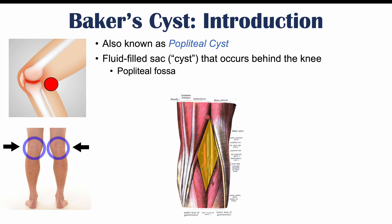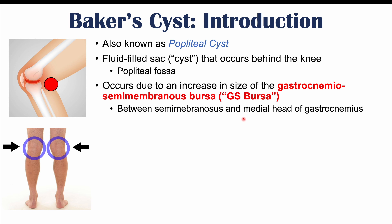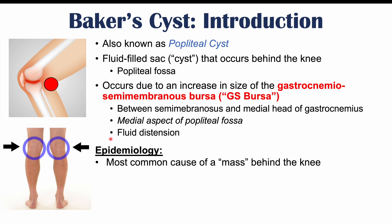Here is the popliteal fossa in this location. We'll talk about the muscles in more detail that delineate the popliteal fossa in the next slide. Some Baker's cysts occur due to an increase in the size of the gastrocnemio-semimembranosus bursa, or the GS bursa. A bursa is a fluid-filled sac, and this particular bursa is located between the semimembranosus and the medial head of the gastrocnemius muscle, in the medial aspect of the popliteal fossa. A lot of times the Baker's cyst is due to fluid distension of this bursa.